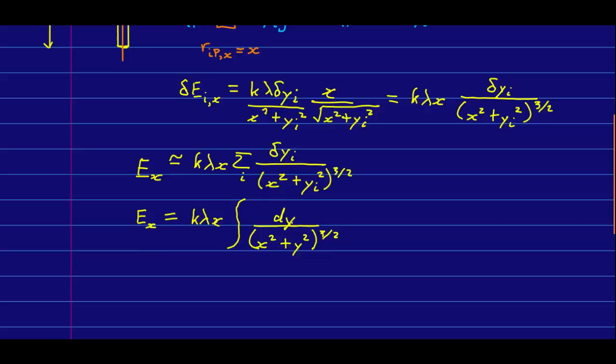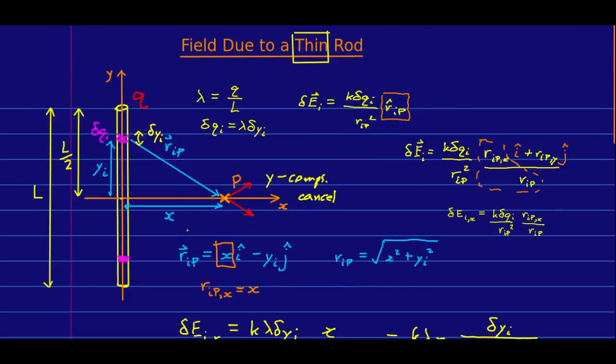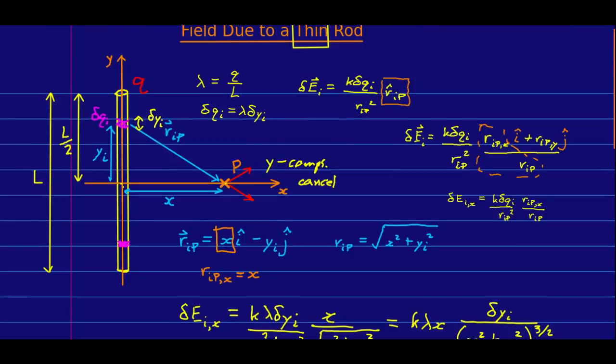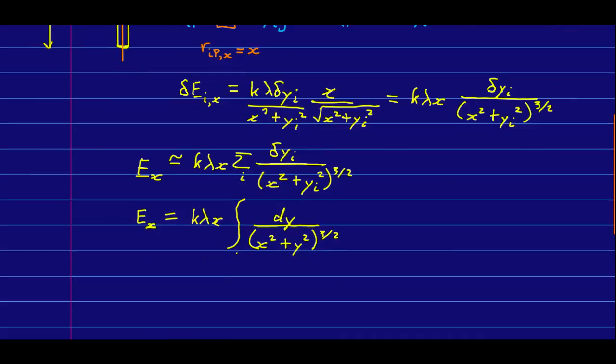So, we are integrating with respect to y. From what to what? Well, at the bottom end of the rod, the value of y is negative l over 2. And at the top end of the rod, it's l over 2. And so, we're integrating with respect to y from negative l over 2 to l over 2.